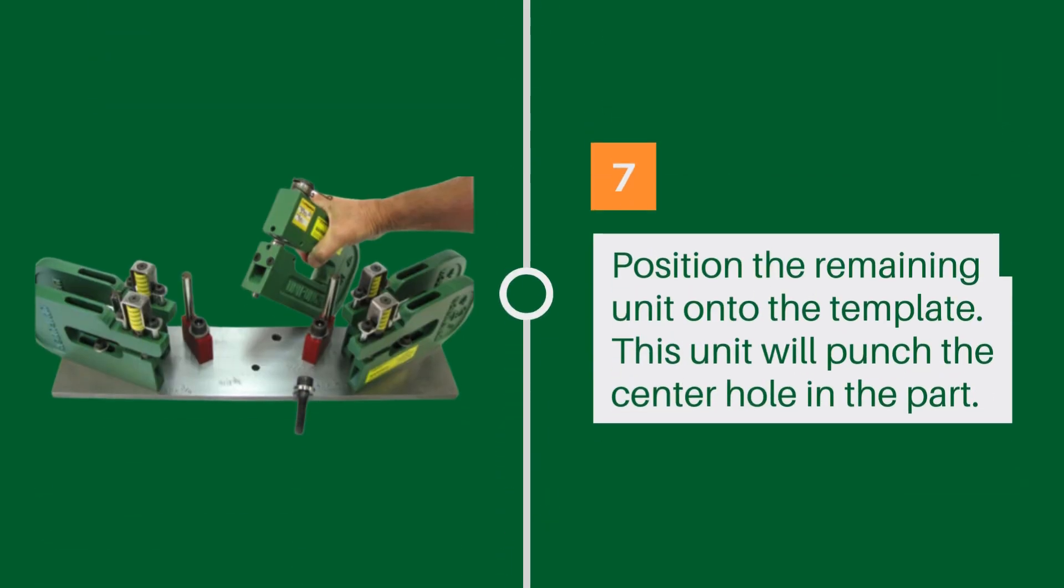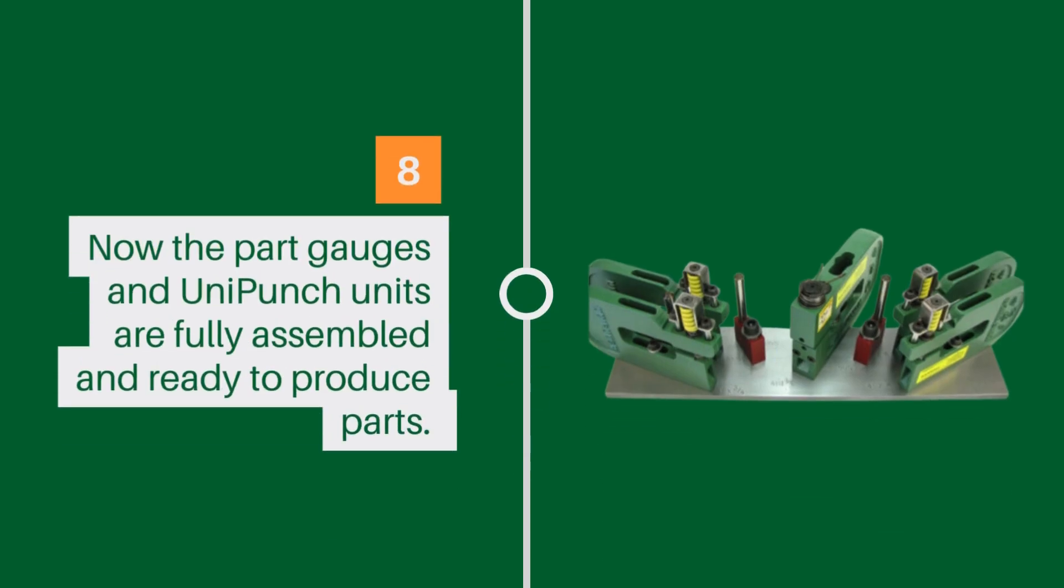Position the remaining unit into the template. This unit will punch the center hole in the part. Now the part gauges and UniPunch units are fully assembled and ready to produce parts.